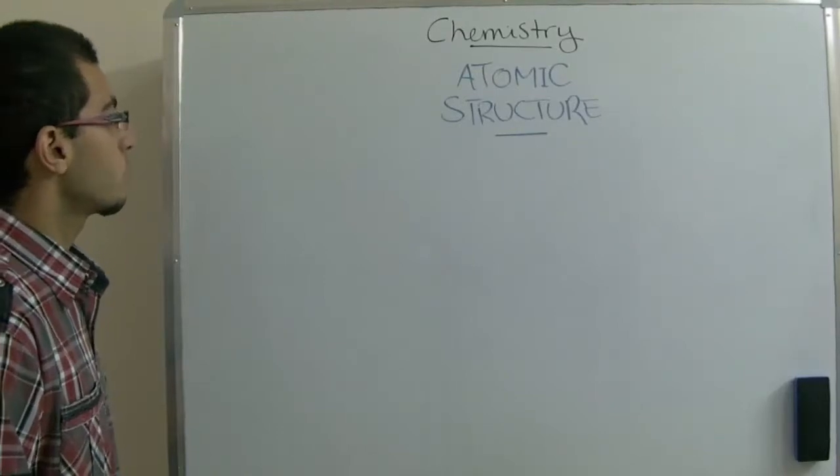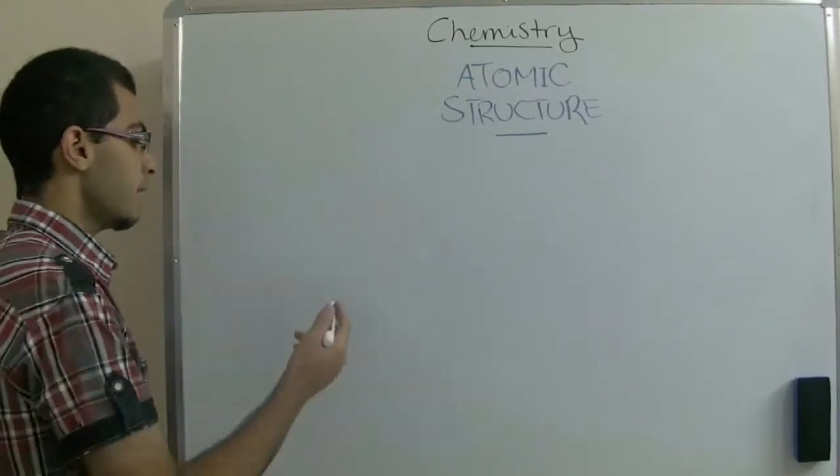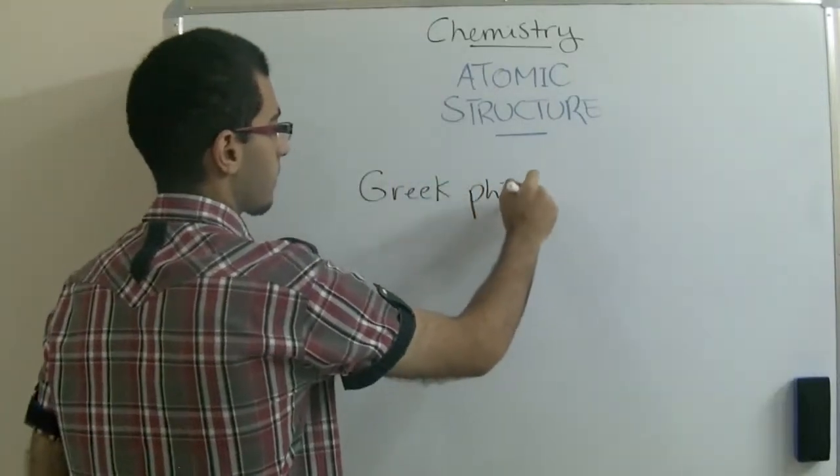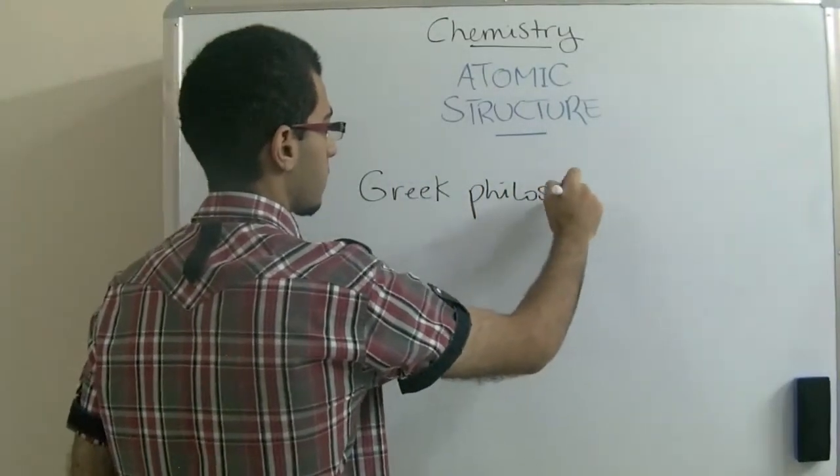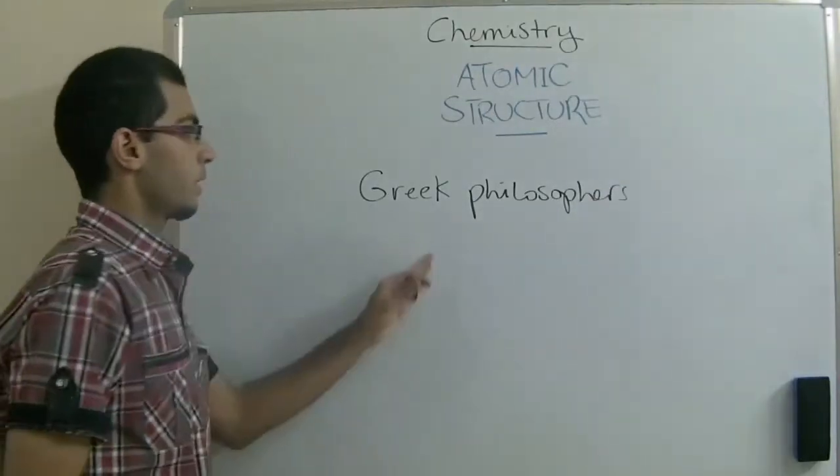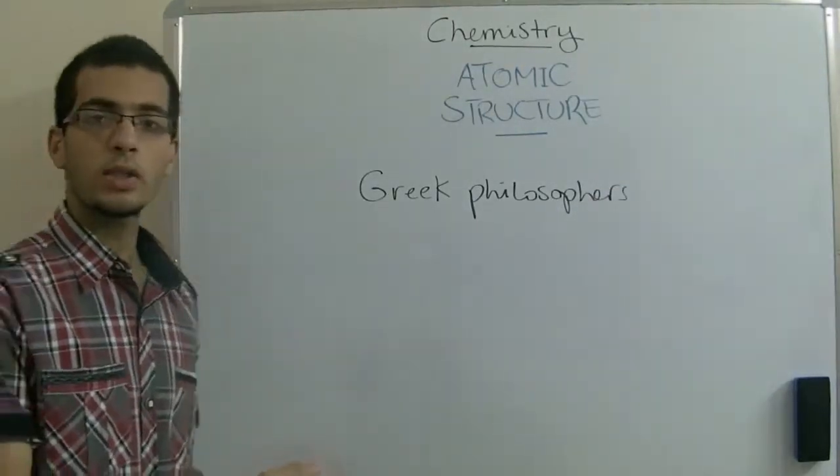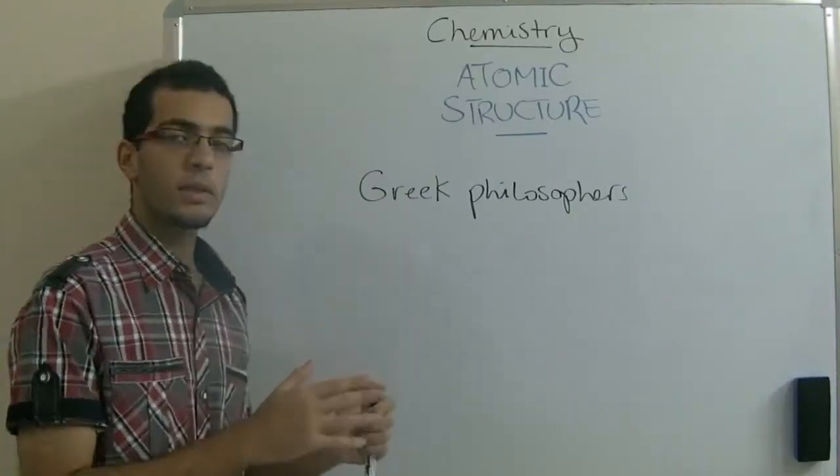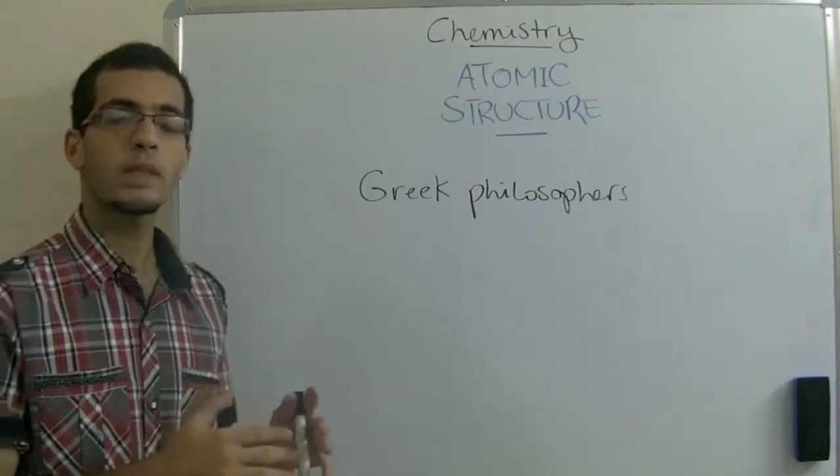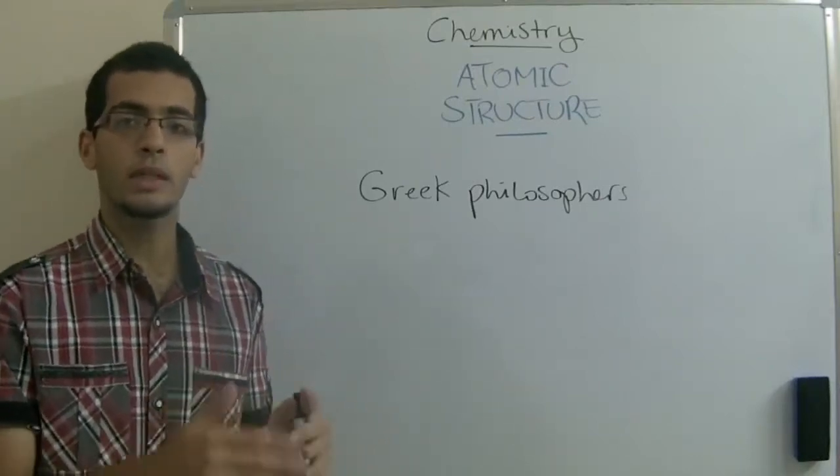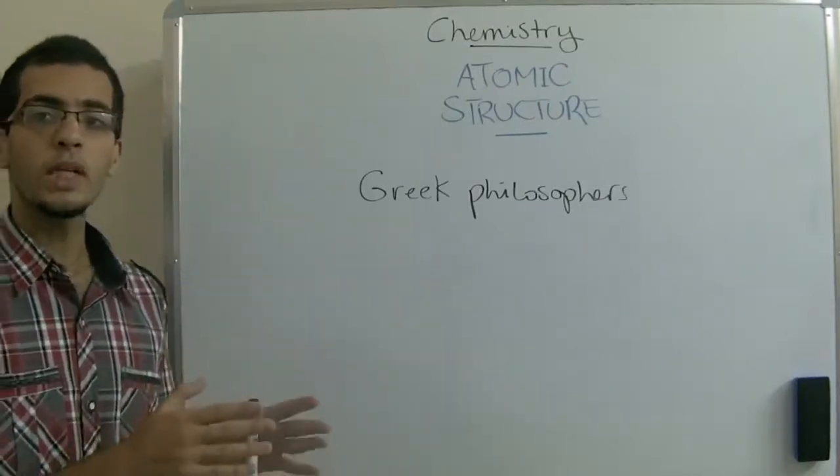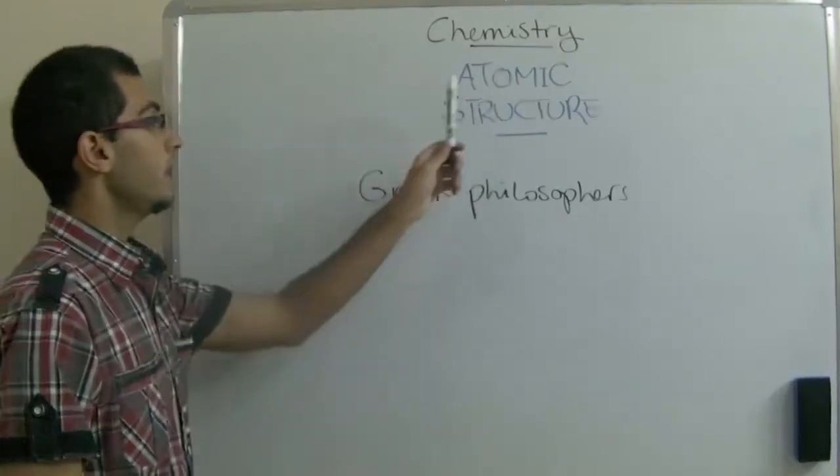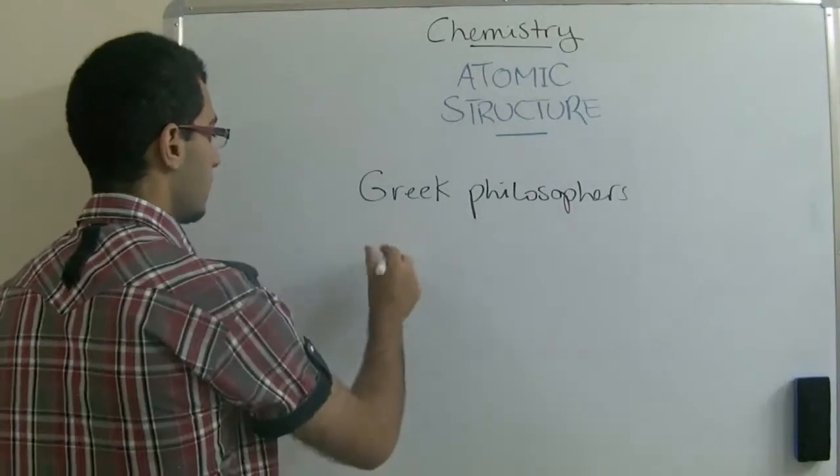The chapter begins with saying that Greek philosophers thought about finding the structure of matter. They said that matter can be divided into smaller fragments, and these fragments can be divided into smaller ones, and so on, till we reach an undividable particle. They named this particle atom.